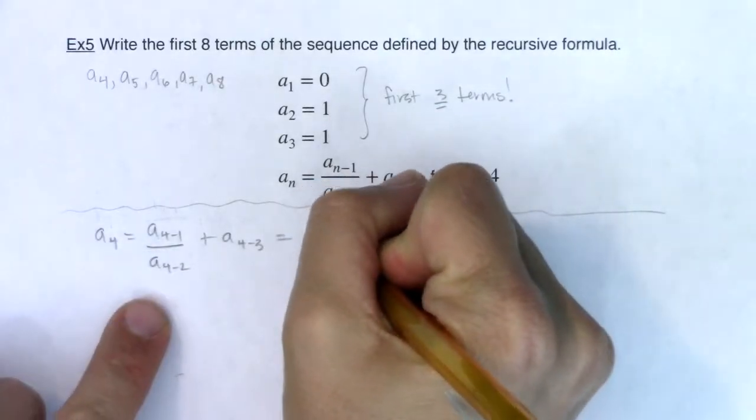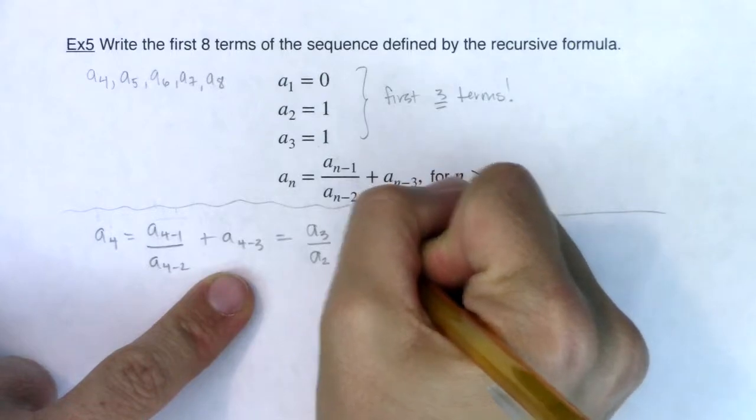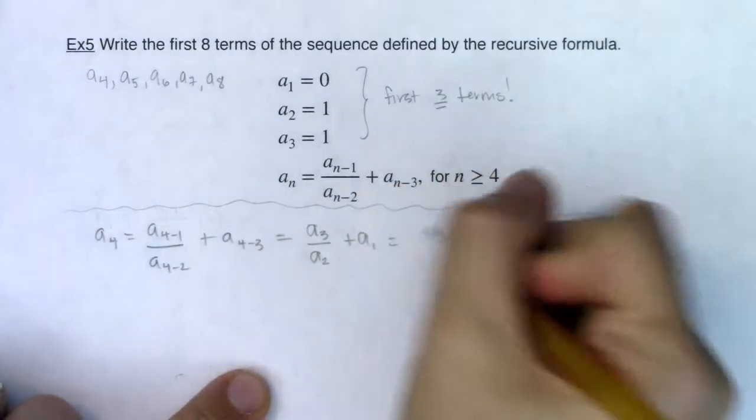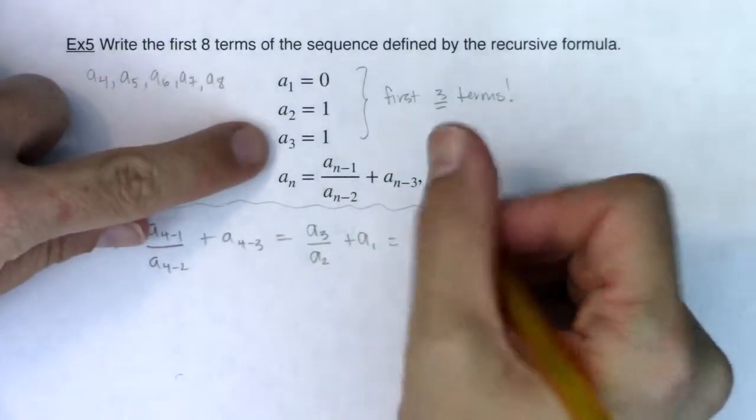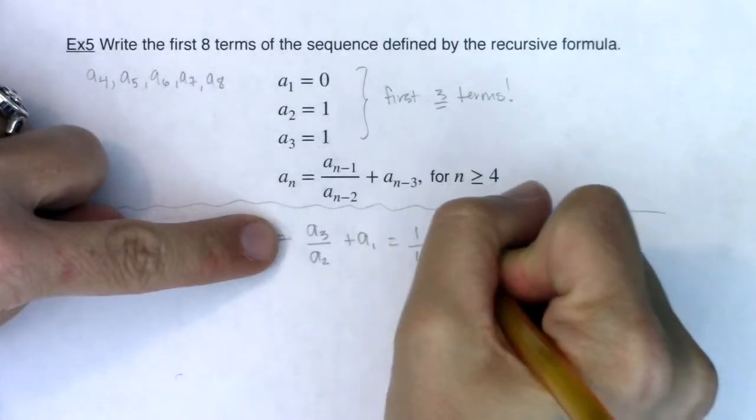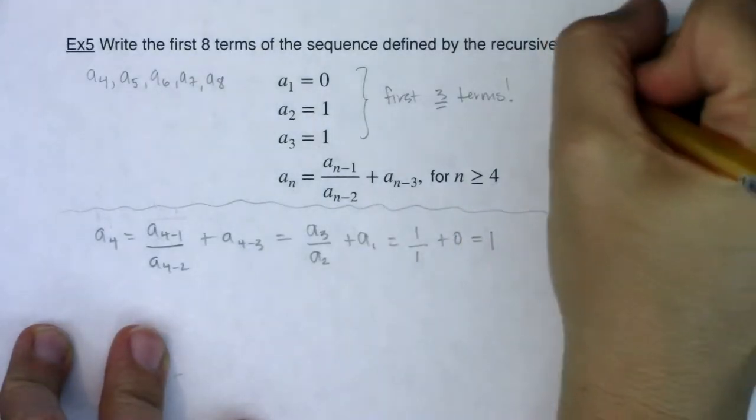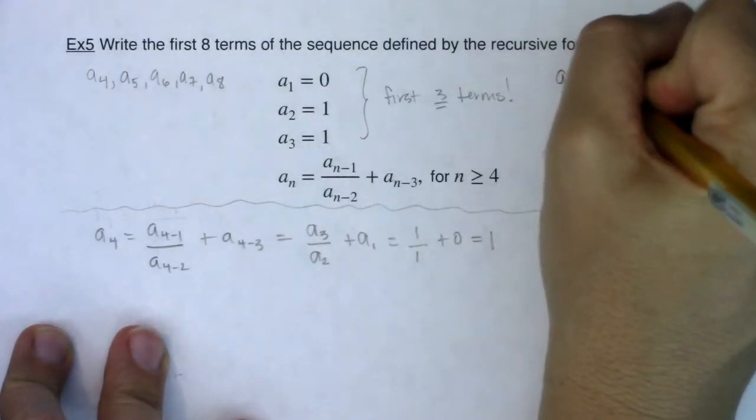So a sub four would be equal to a sub four minus one over a sub four minus two plus a sub four minus three. Let's see what this simplified to. So again, the numerator a sub three, the denominator here a sub two, this last term that I'm adding a sub one. And I was given those numbers. So let's see what we have. A sub three is one, a sub two is one, and a sub one is zero. So this term is equal to one. So I'm going to keep track of that. I know a sub four is equal to one.